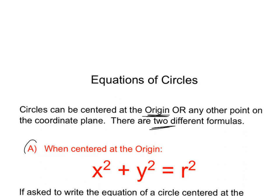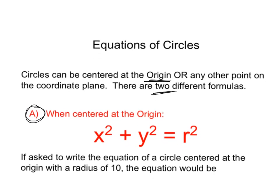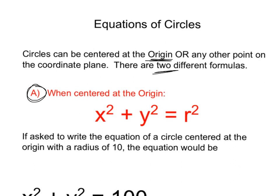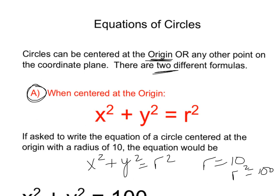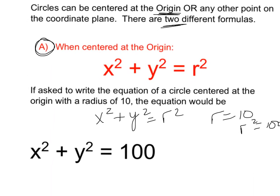There are two different formulas. When centered at the origin, the equation of a circle is x squared plus y squared equals r squared. For example, if asked to write the equation of a circle centered at the origin with a radius of 10, you write the equation first: x squared plus y squared equals r squared. If r equals 10, then r squared equals 100, so the equation is x squared plus y squared equals 100. It's that straightforward, especially when centered at the origin.